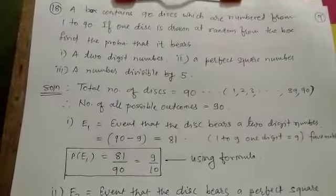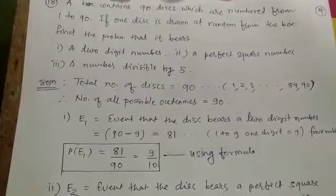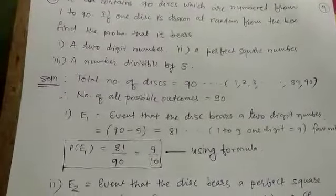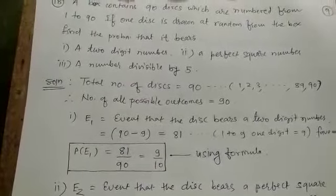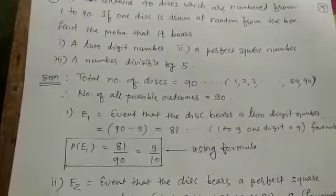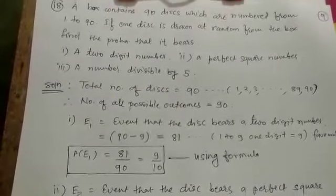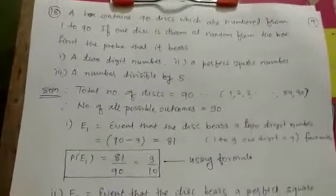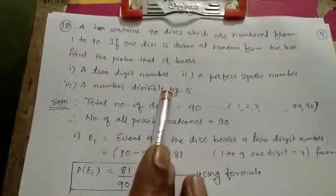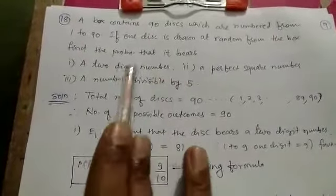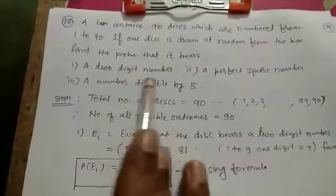There are 90 discs and the numbering is from 1 to 90, means on each disc they are written like 1, 2, 3, 4, up to 90. If one disc is drawn at random from the box, find the probability that it bears a two-digit number.